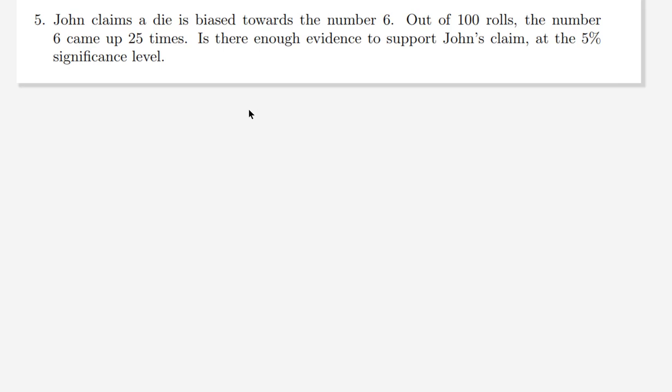Let's have a look at one last question where the claim may not necessarily be the null. John claims a die is biased towards the number six. Out of 100 rolls, the number six came up 25 times. Is there enough evidence to support John's claim at the 5% significance level?